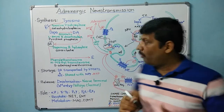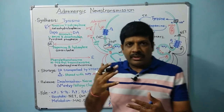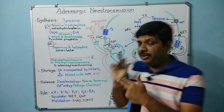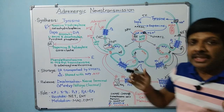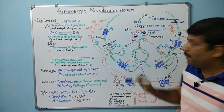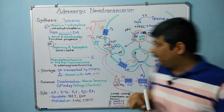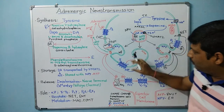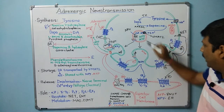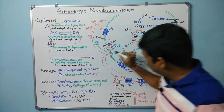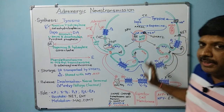Norepinephrine is stored along with co-transmitters NPY (neuropeptide Y) and ATP. The concentration of norepinephrine, NPY, and ATP depends upon the location where the neurotransmitter has to be released. All three co-transmitters are stored in one vesicle, and release is specific to location. The three separate vesicles shown in the figure are just for explanation — they are not actually three different vesicles.